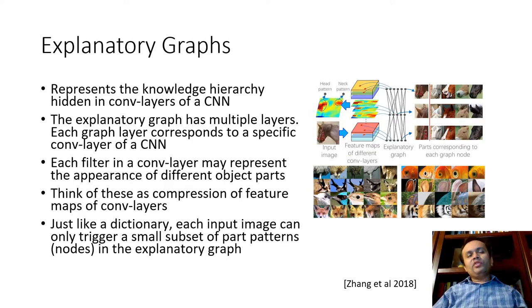So now we focus on the visualization methods associated with explanatory graphs. So consider a CNN. So within the explanatory graph, there are multiple layers, each layer corresponding to a convolutional layer within a CNN. And so each filter in a convolutional layer, so it may represent different object parts. So, for example, beaks of birds, ears of, let's say, dogs, so on and so forth.